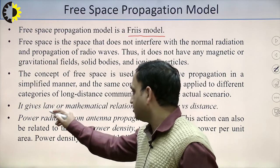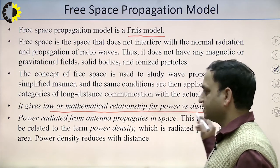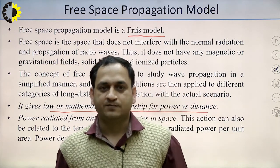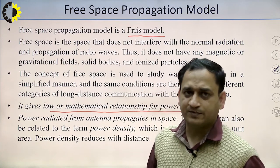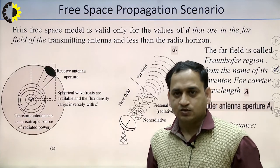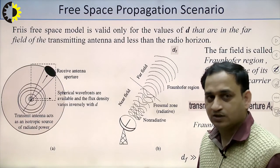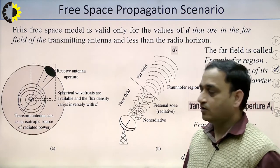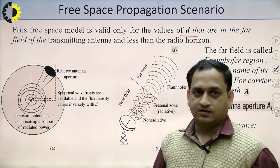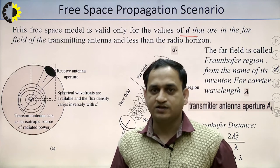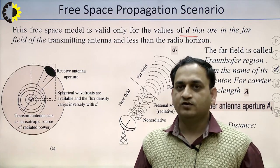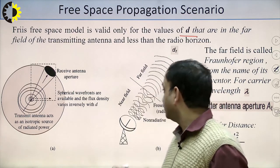The free space propagation model gives the mathematical relationship for power versus distance, for the power radiated from the antenna as it propagates in space. The free space model is valid for values of D that are in the far field of the transmitting antenna. This far field is defined by the Fraunhofer region — the far field is called the Fraunhofer region, named after its inventor and based on wavelength.